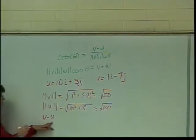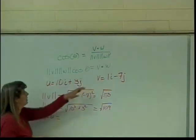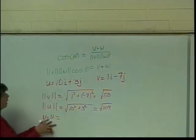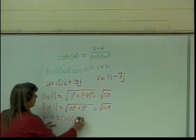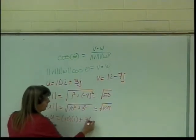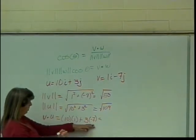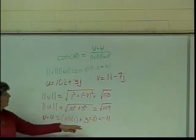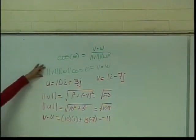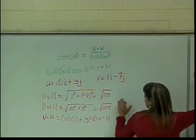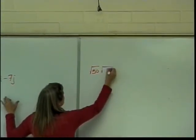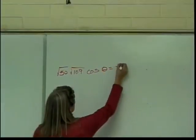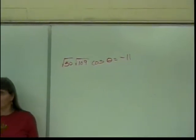Now I need the dot product of u and v. It didn't matter which order I wrote it in because they are commutative. I have 10 times 1 plus 3 times negative 7, which gives me 10 plus negative 21, so that's negative 11. Now if I plug all this into the formula, I have the square root of 50 times the square root of 109 times the cosine of the angle equals negative 11. So far, so good.